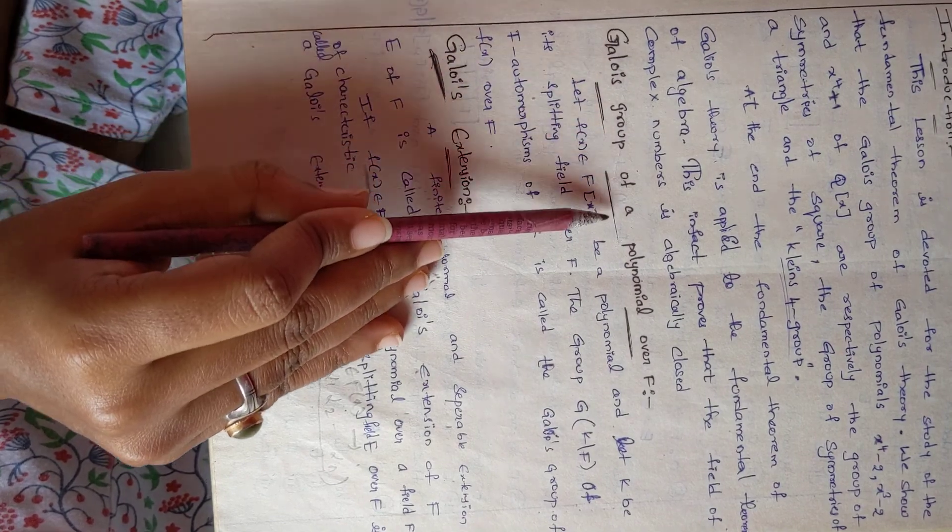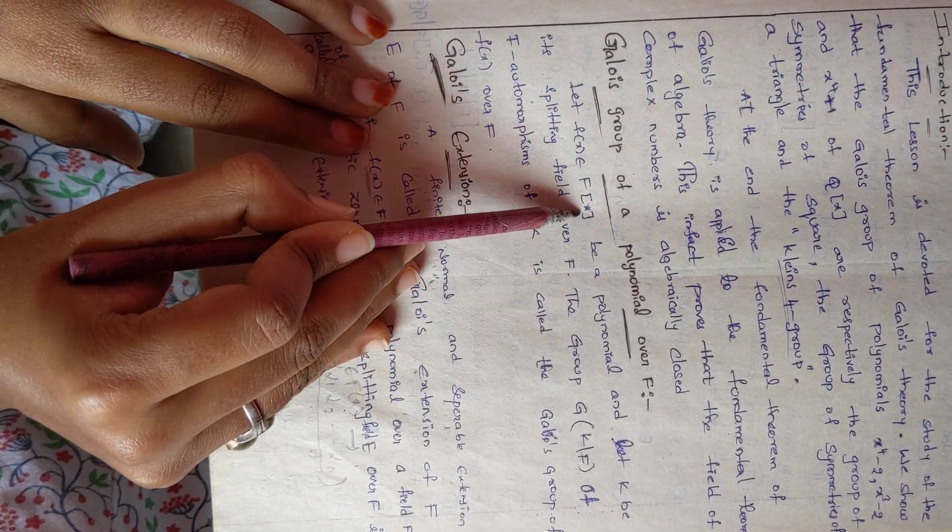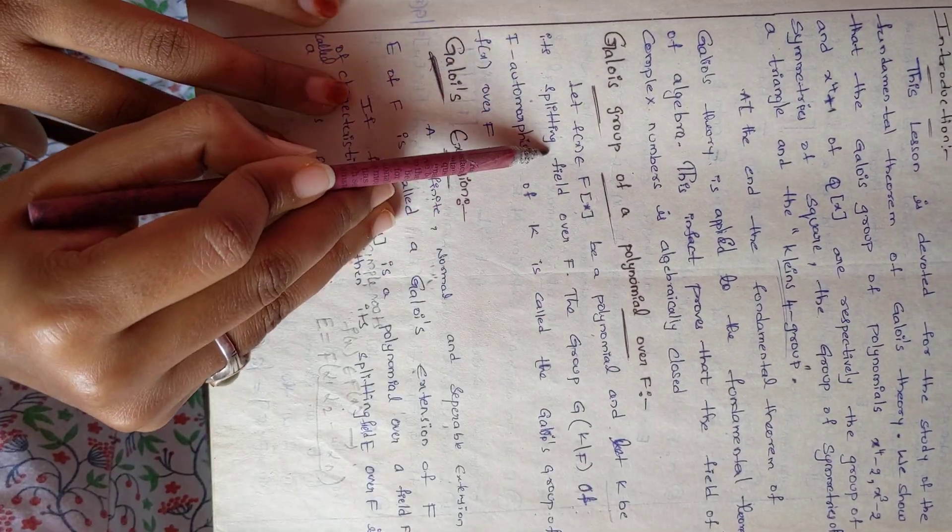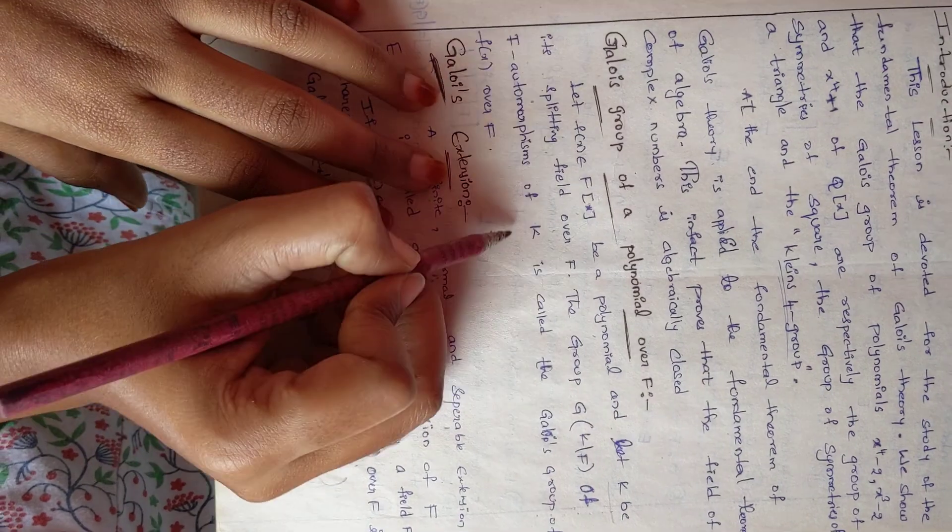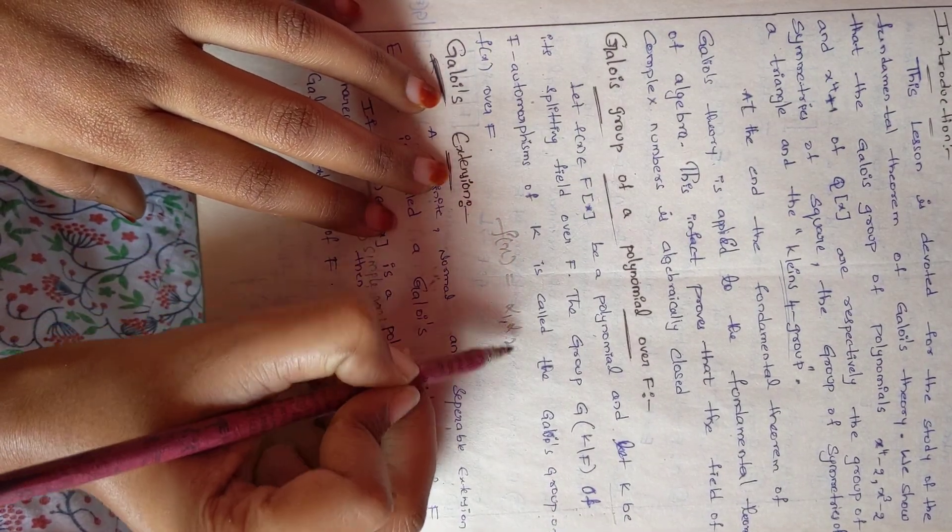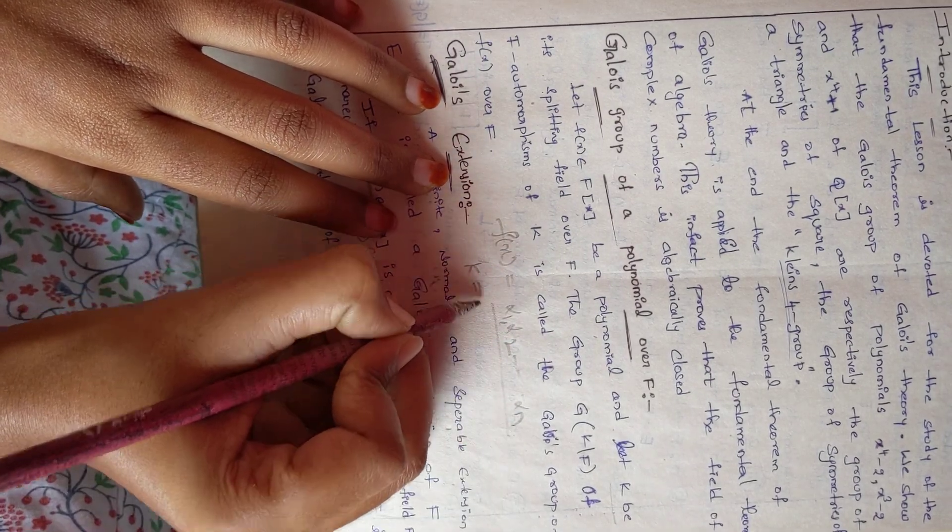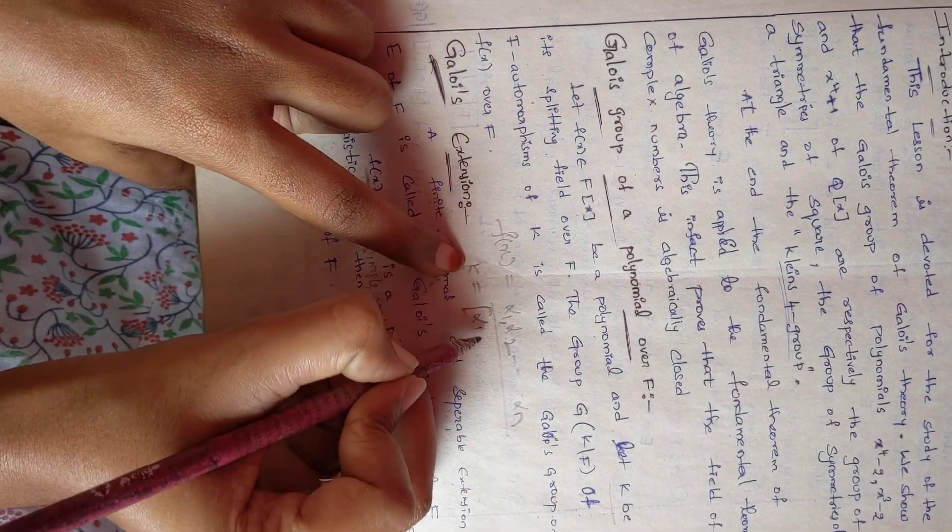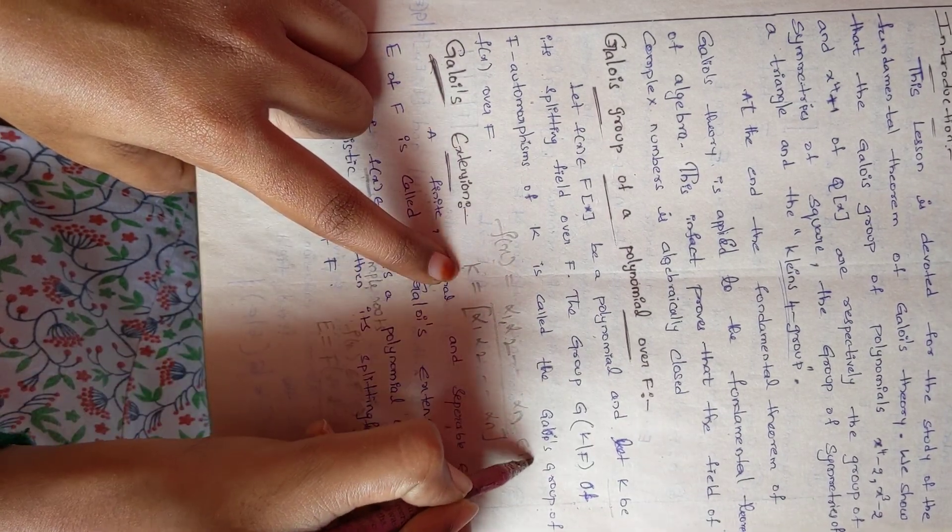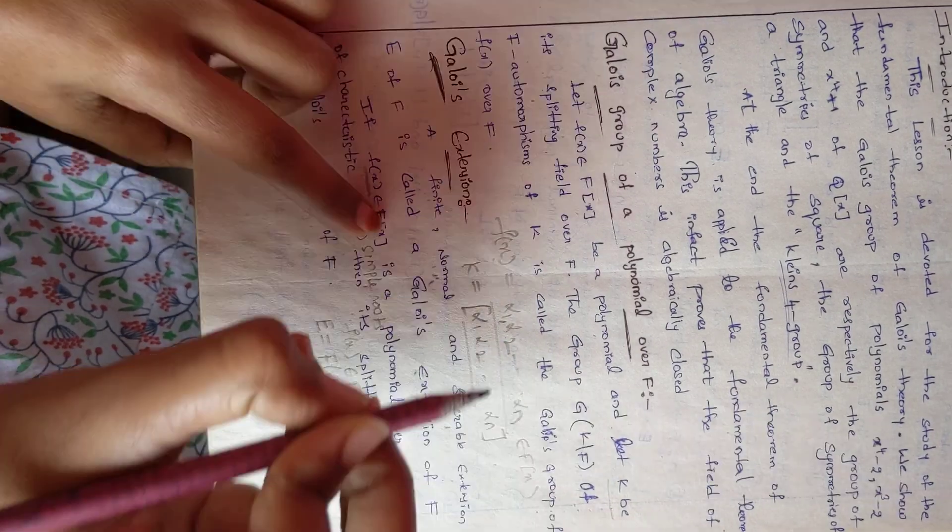Next, what is a Galois group of a polynomial? We are taking a polynomial f(x) in field F[x] and we also take K to be the splitting field over F. That means f(x) has n roots, suppose α₁, α₂, ..., αₙ. These roots exist in K, which is a fixed field over f(x).